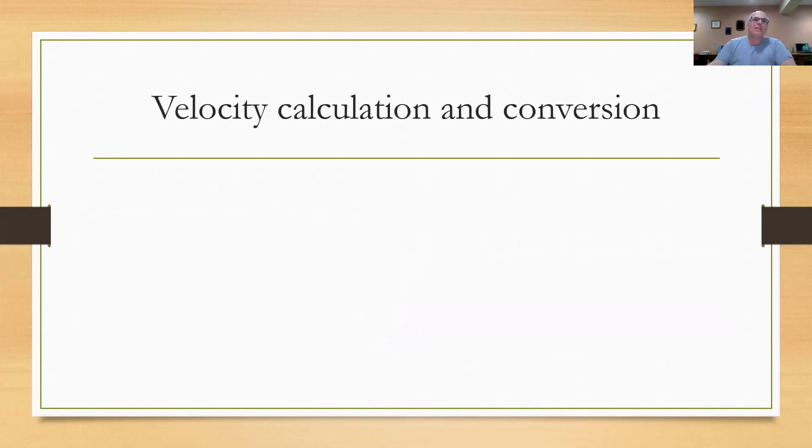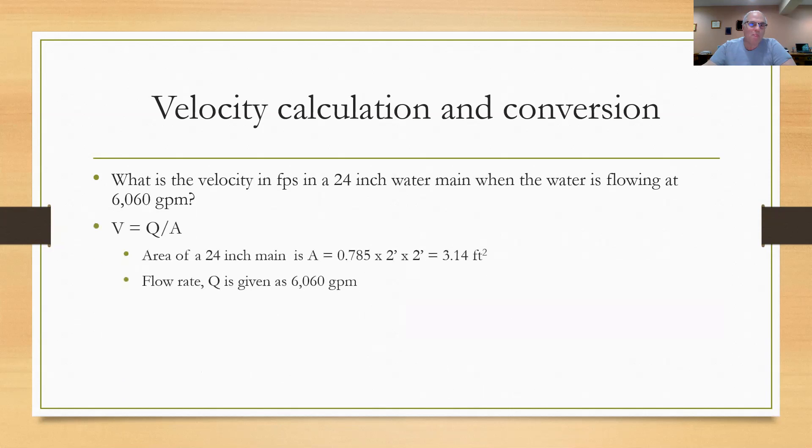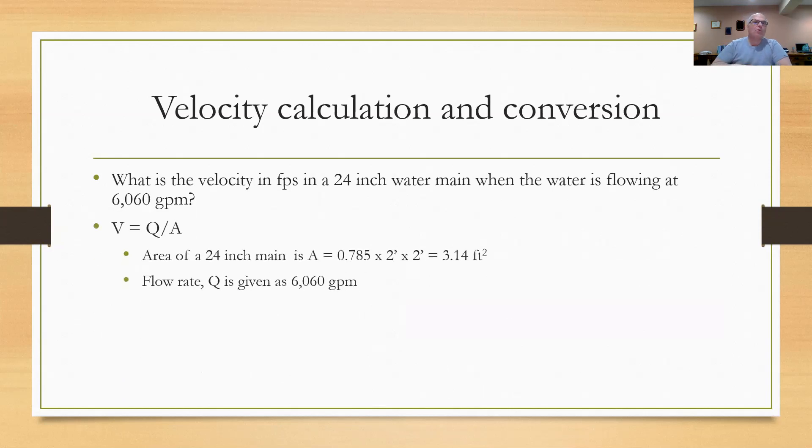Let's try a calculation where velocity has to be calculated and converted. What's the velocity in feet per second in a 24-inch water main when the water is flowing at 6060 gallons per minute? Right away, you should be thinking feet and gallons, I can't do that. I've got to change the gallons to cubic feet or whatever back and forth. Remember, your units have to match.